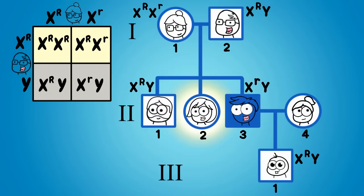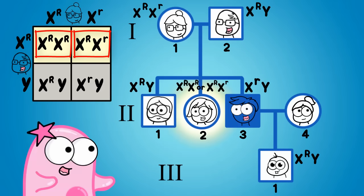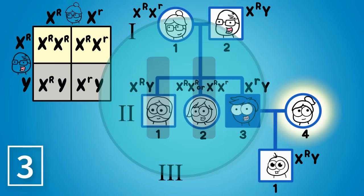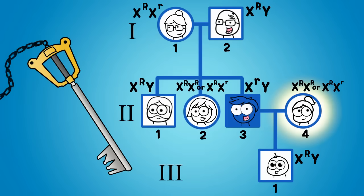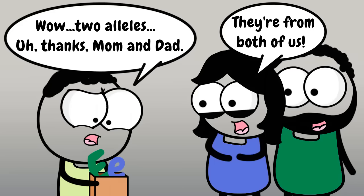What about individual 2 in generation 2? She can be a carrier like her mother, but she could also be homozygous dominant because it's possible to get one of those from each parent. If it's possible, you must include it. Pause the video and try the last female. Remember, the key is to always check that when you look at a child, they have to be able to get one of their alleles from each parent.